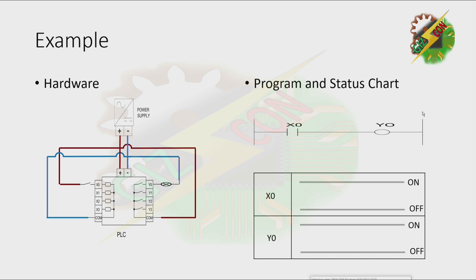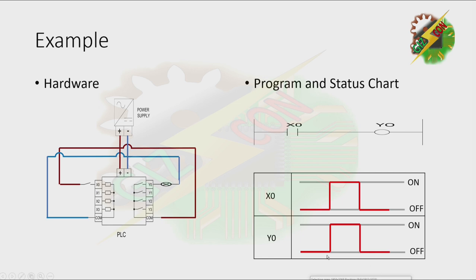Let's have our example. We have X0 and Y0, which are initially off. If the switch at X0 is closed, X0 will be energized, and that will make Y0 energize also, which will make the lamp at Y0 turn on. Then let's try to open the switch — that will make X0 turn off, and Y0 will turn off also. As you can see in the status chart: if X0 is on, Y0 is on; if X0 is off, Y0 is off.